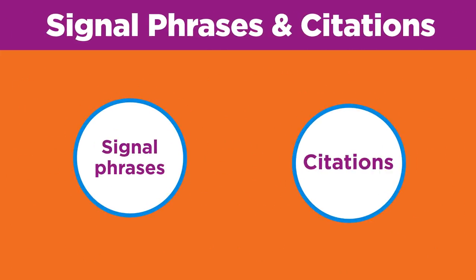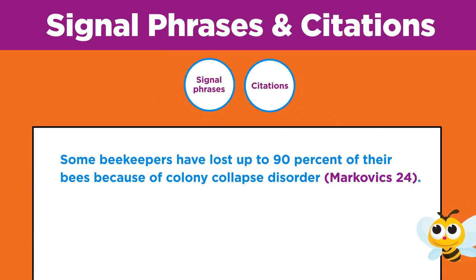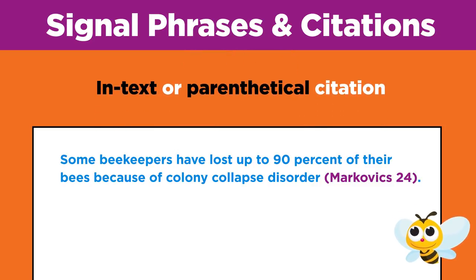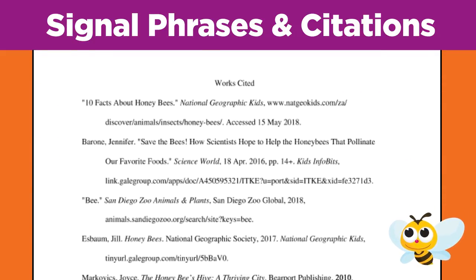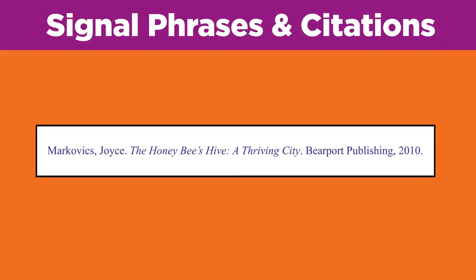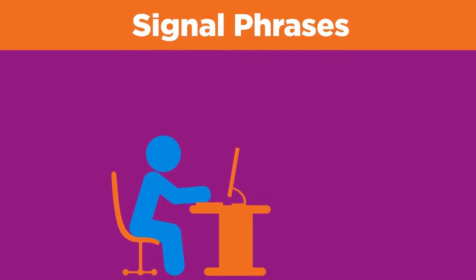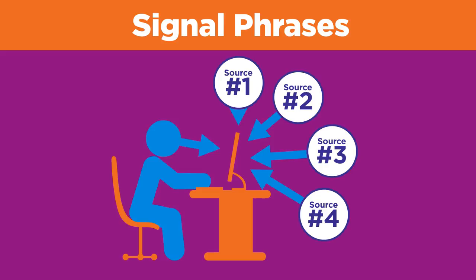Signal phrases and citations go hand in hand. When doing research, you mention sources within the paper to show where ideas come from. This is sometimes called in-text or parenthetical citation. You also create citations for all of the sources together in the bibliography or works cited at the end of your paper. Here's what a full citation would look like for the Markovic book. By now you understand that signal phrases are important — use them to tell the reader when you are quoting, paraphrasing, or summarizing someone else's ideas, and to indicate when you're adding your own comments, interpretations, or clarifications.